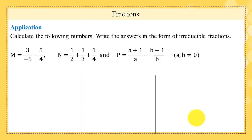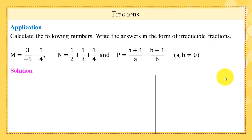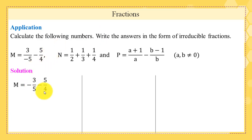This is an application: calculate the following numbers m and p. Please pause the video and try to solve. Solution: m = 3/(−5) − 5/4. Since the minus can be placed in the numerator, m = −3/5 − 5/4. Using the subtraction property, this equals −37/20.